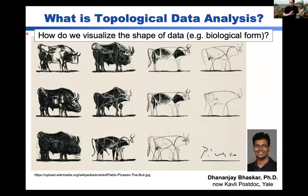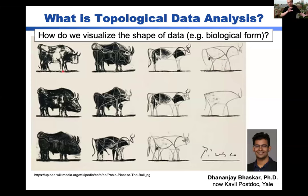Pablo Picasso had his own take on this. He was trying to deconstruct how different bulls would look — maybe we can go from something very similar to the real representation, but capture the essence of some kind of skeleton and use this to understand the bull from different perspectives and different species. So in some sense, how do we think about shape? I'll phrase this as a thought experiment.